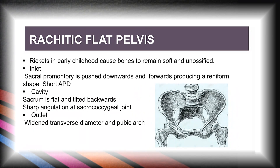Rickets in early childhood causes bones to remain soft and unossified. At the inlet, the sacral promontory is pushed downward and forward, producing a reniform shape. The sacrum is flat and tilted backward, with sharp angulation at the sacrococcygeal joint. At the outlet, widened transverse diameter and pubic arch are present.